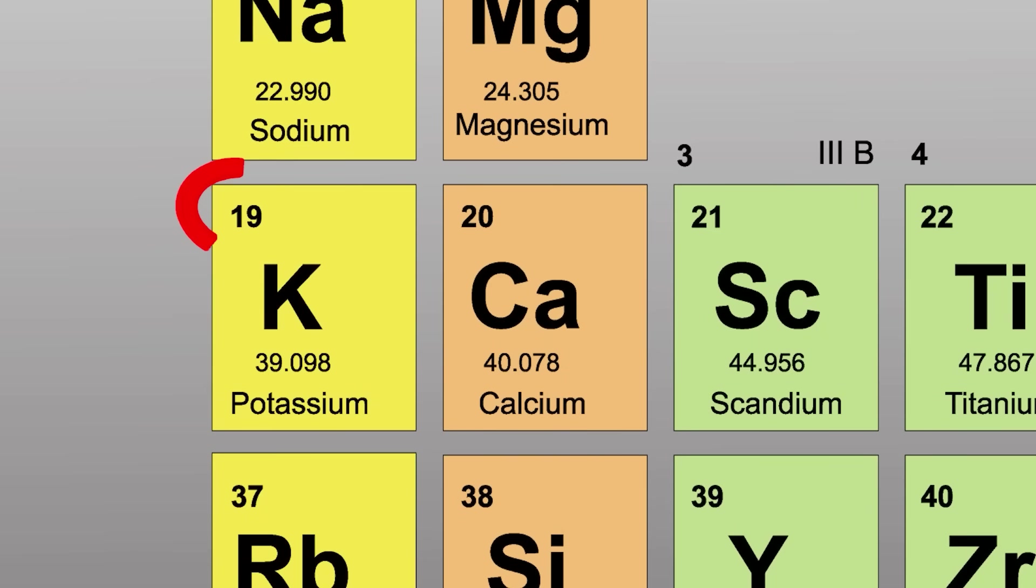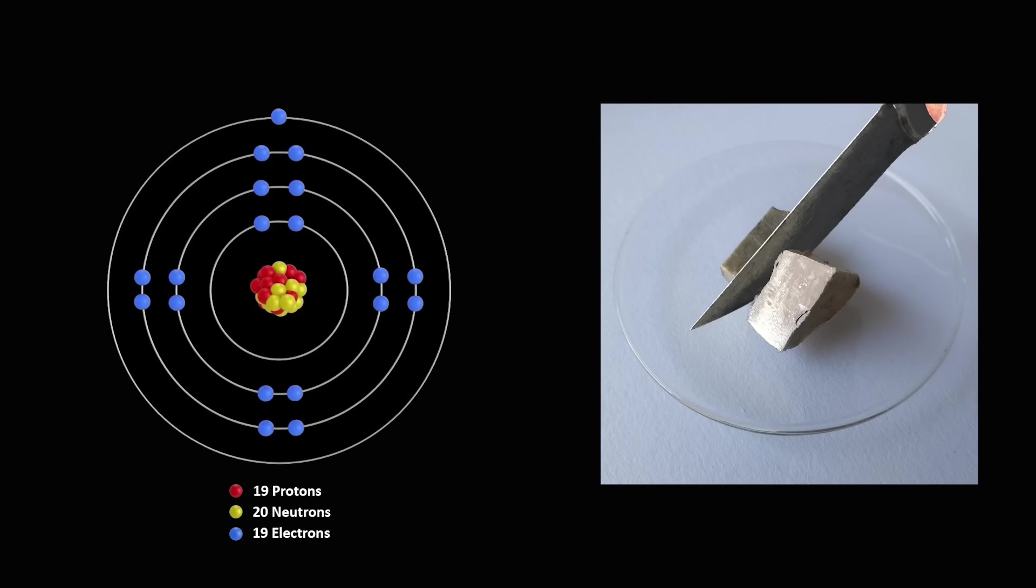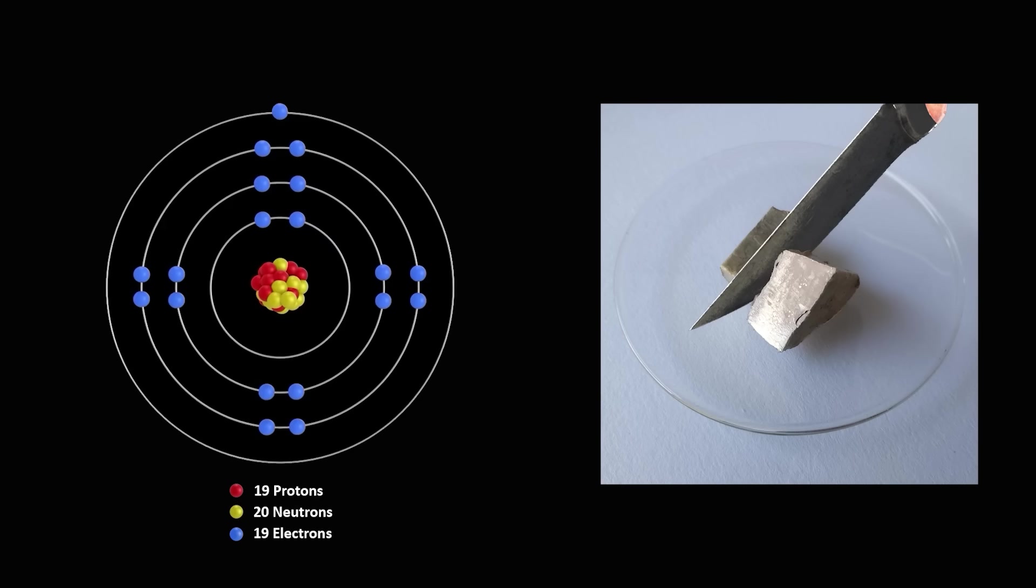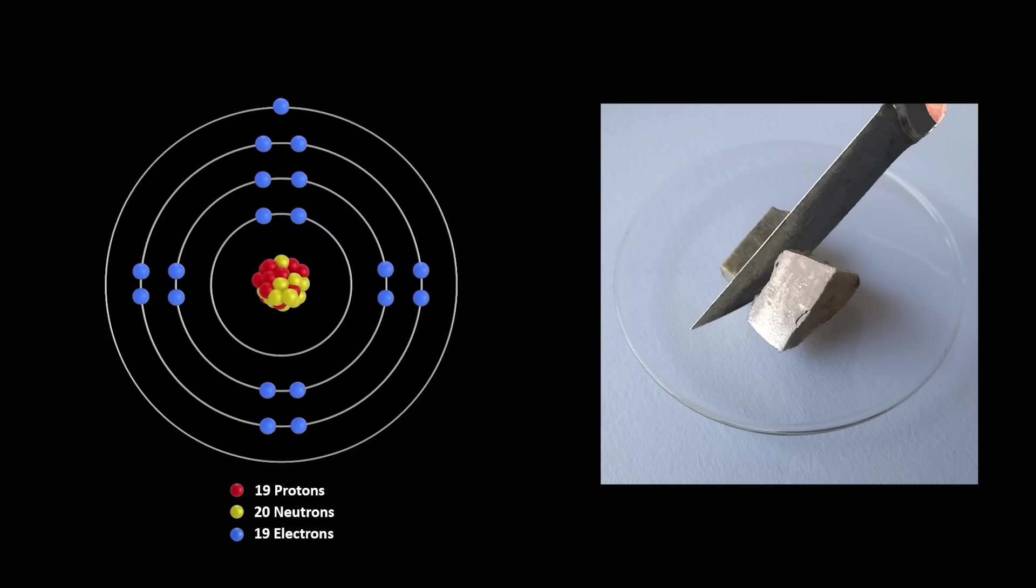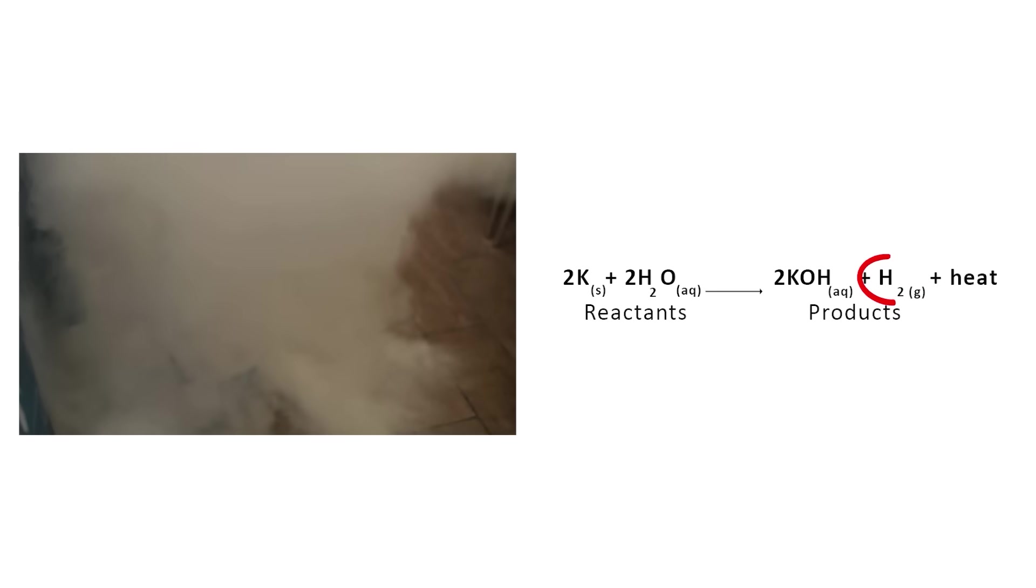Take for example element number 19, potassium. It has 19 protons. It's a silvery white metal at room temperature, but is soft enough to cut with a knife. But it's highly reactive. In fact, it will catch on fire when put in water because it produces hydrogen and heat, which ignites when combined with oxygen.